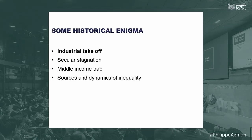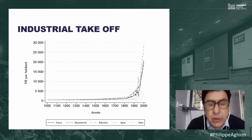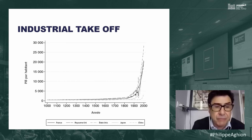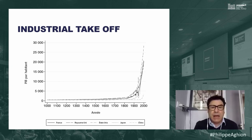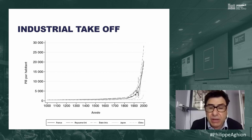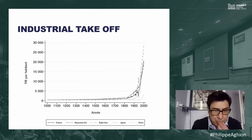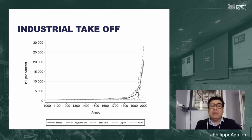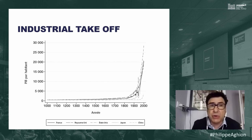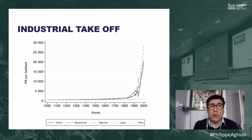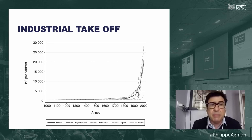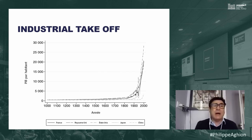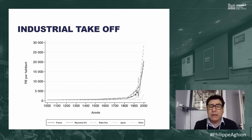The first historical enigma is the industrial takeoff. Work by Maddison shows the evolution of average per capita GDP worldwide — not much happens until 1820, when growth really takes off in Europe. The enigma is: why in Europe, and why so recently? Growth as we know it is only about 200 years old. Sapiens is 10,000 years old, yet growth only began in Europe. Why not in China, despite their many great inventions?